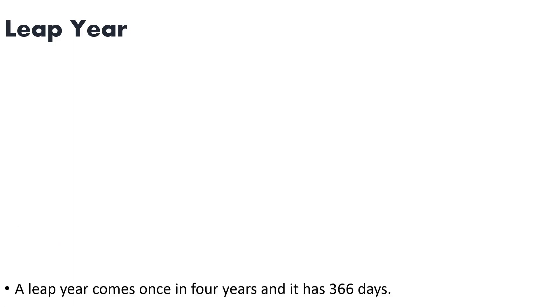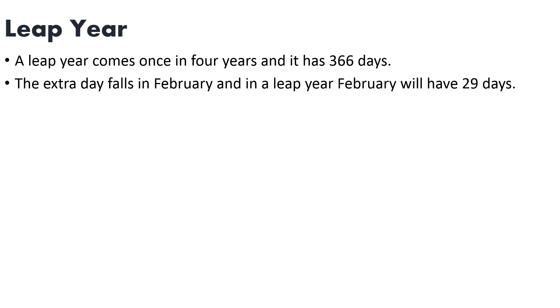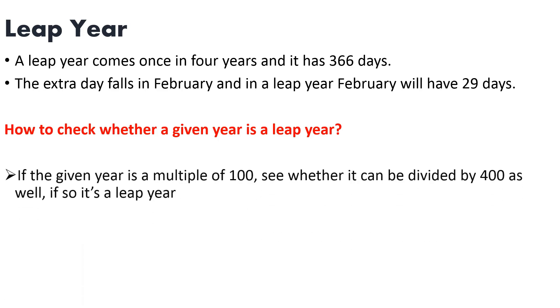In the next section we are going to look at what is a leap year. A leap year comes once every four years and has 366 days. The extra day falls in February, which will have 29 days in a leap year. To check whether a given year is a leap year, first check whether the year is a multiple of 100 — if so, check whether it is divisible by 400.